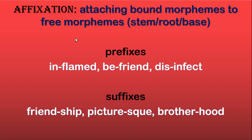You can have prefixes — for example, in-flame, be-friend, dis-infect. And you can have suffixes: common suffixes like -ship in 'friendship,' -esque in 'picturesque' or 'Romanesque,' and -hood in 'brotherhood.' This -hood is a common suffix. Now you have an idea of what prefixing and suffixing are, and both of them are called affixes.